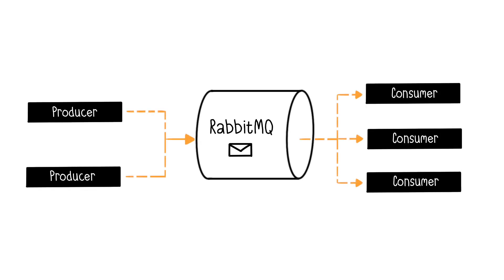RabbitMQ is a message broker, which means it facilitates communication between different systems by enabling the sending and receiving of messages, such as between different parts of an application, between different applications or microservices.